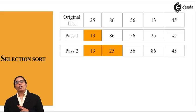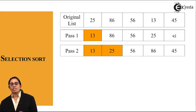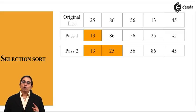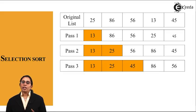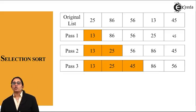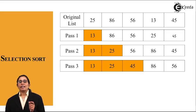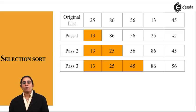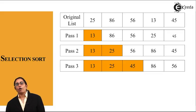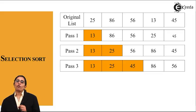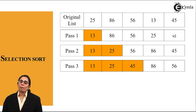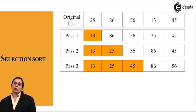The pass 2 output list becomes input to pass 3. In pass 3, 56 is my initial location and it is compared to find the minimum element in 86 and 45. We find that 45 is the minimum element, so we swap 45 and 56. We get 13, 25, 45, 86 and 56.